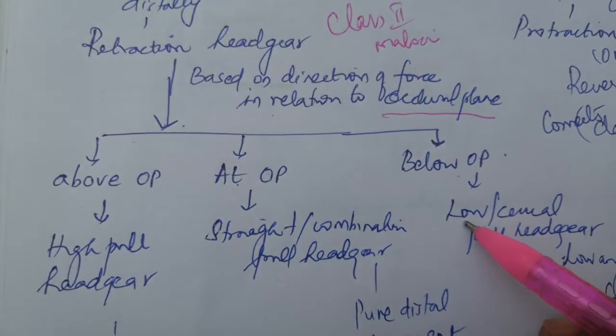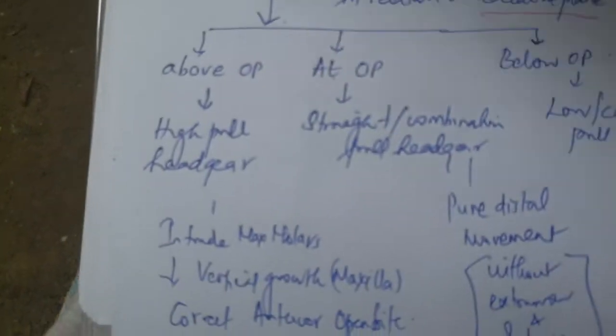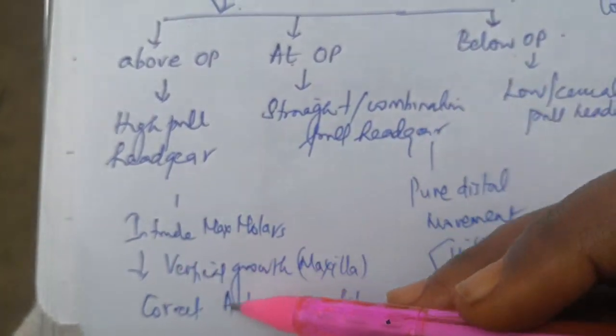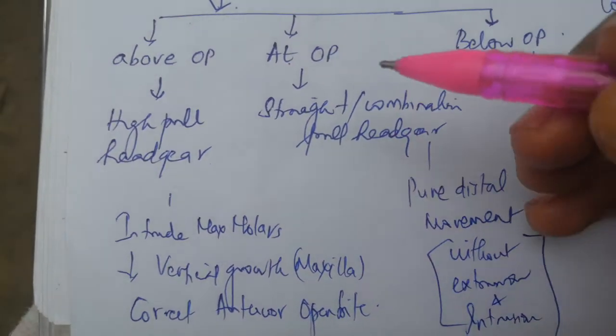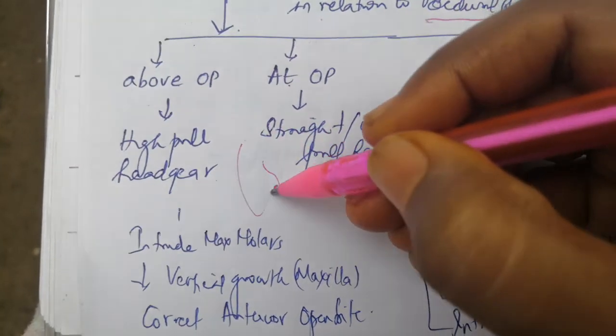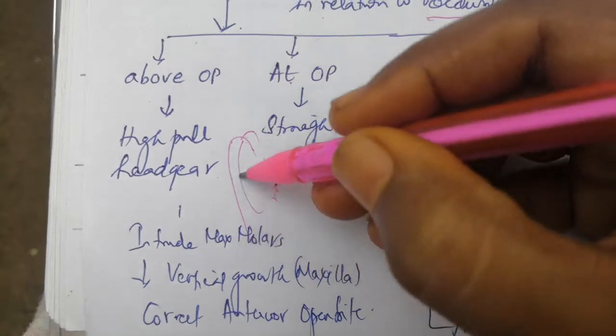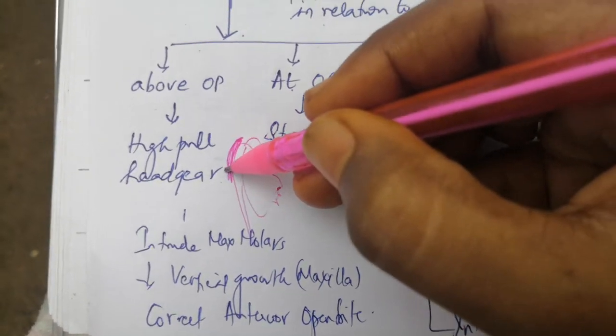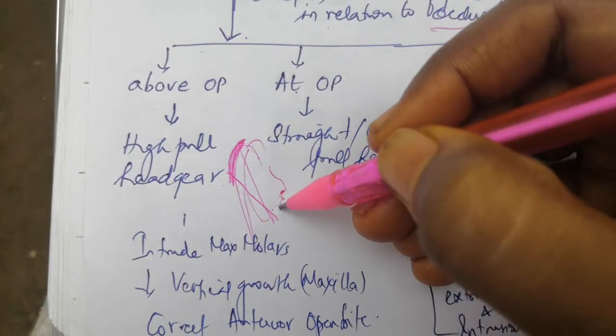High pull headgears are mostly used to reduce the vertical growth of the maxilla. If we have a high pull headgear, only occipital headgear, it will come like this and pull with the maxilla, high pull.